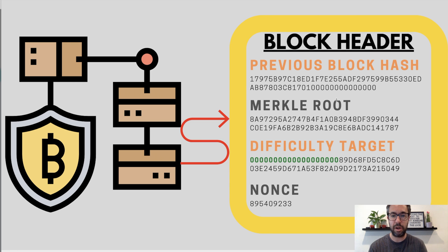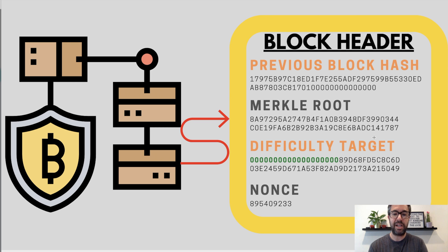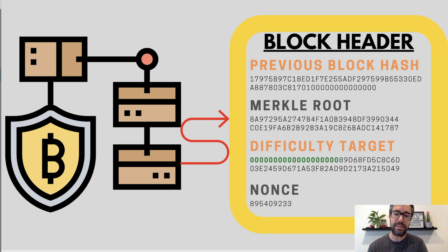The next thing that appears in the block header is the Merkle root. The Merkle root is just a fancy word for the hash of all the transactions contained within the block — essentially a fingerprint of the block, because it's all the transactions hashed together.